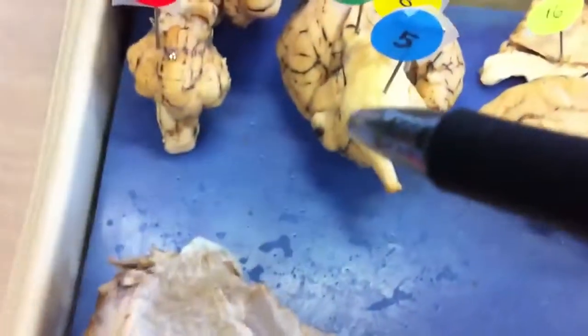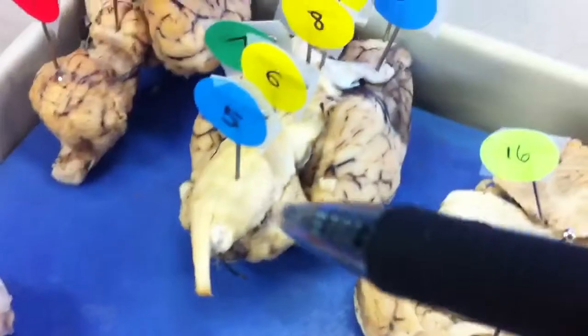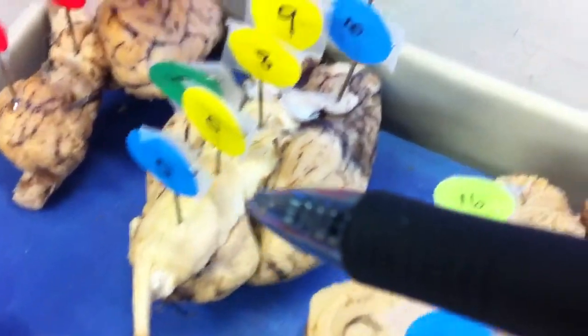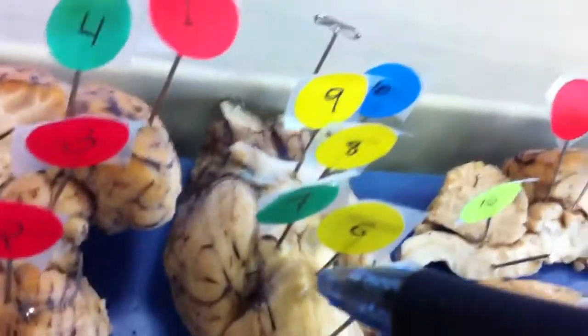And then finally, here we have, again, the medulla oblongata and then the pons. Then seven will be the cerebropeduncle, which will be right there.